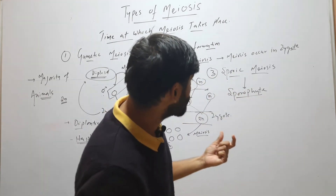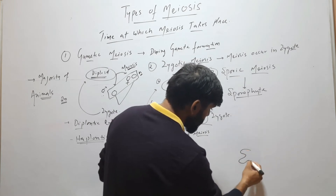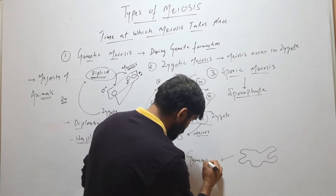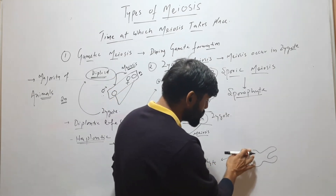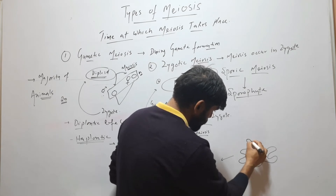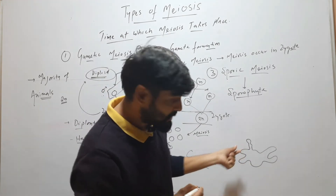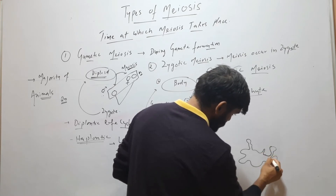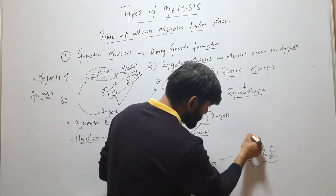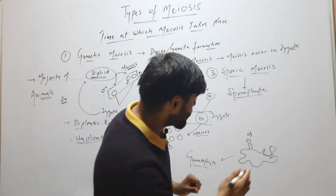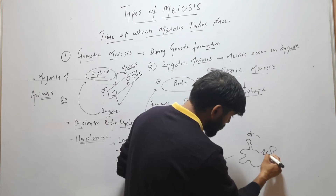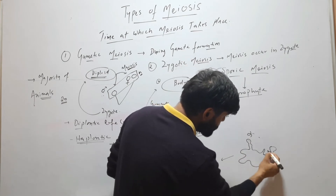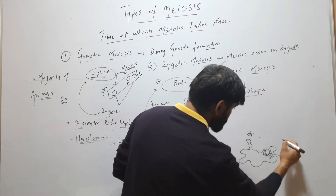Let's understand sporic meiosis with the life cycle of a bryophyte. In bryophytes, the main dominant body is the gametophyte. Sex organs are borne on this gametophyte — the antheridium (male sex organ) and the archegonium (female reproductive structure). The antheridium forms male gametes, which are motile. They swim in water and reach the archegonium, which contains the egg. After fusion, there is formation of a zygote, which is 2N.